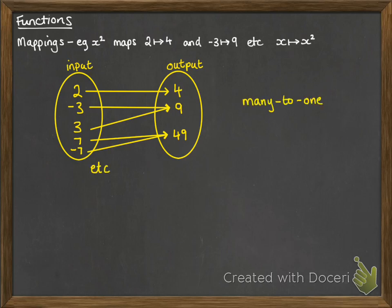This kind of mapping is called many-to-one. So more than one number being input could lead to the same output. You can have the minus 3 and the 3 both giving you the same output of 9.